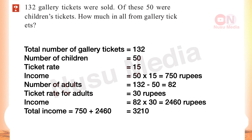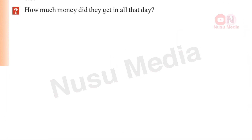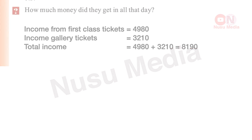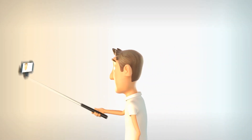How much money did they get in all that day? The income from first class tickets is 4,980 rupees. The gallery ticket income is 3,210 rupees. The total income is 8,190 rupees. This is how much money they got in all that day.